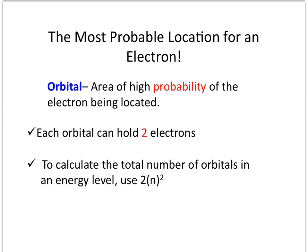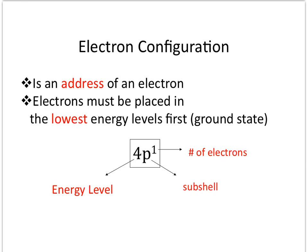Electron configuration is basically just recording the address of an electron. There are a couple of rules to remember. The first rule is that electrons must be placed in the lowest energy level first — this is called the ground state. When we write an electron configuration, we refer to each energy level, subshell, and how many electrons are within that subshell, as seen in the designation 2P1. There is a certain filling order, as mentioned previously.